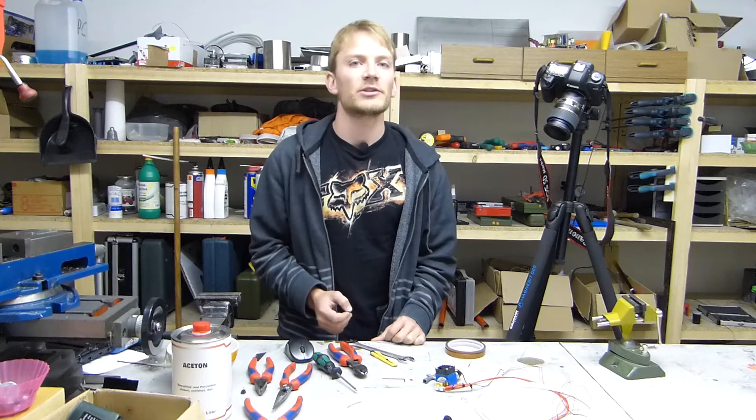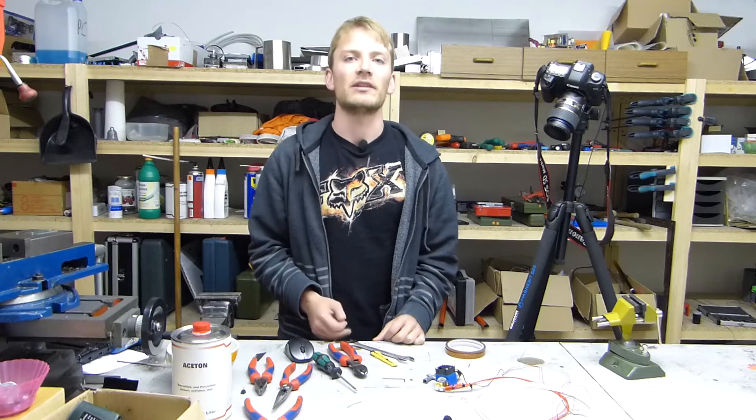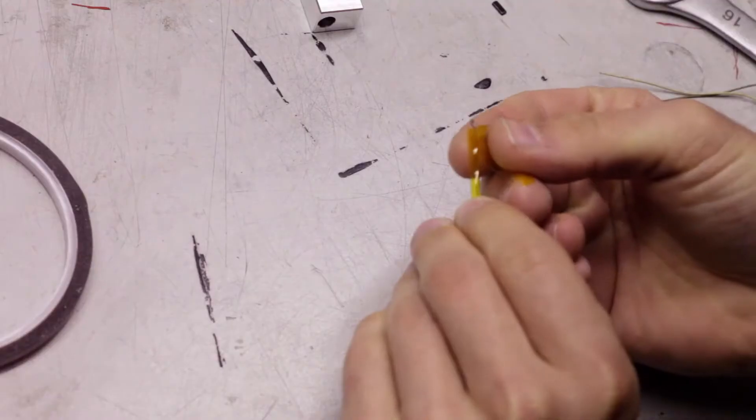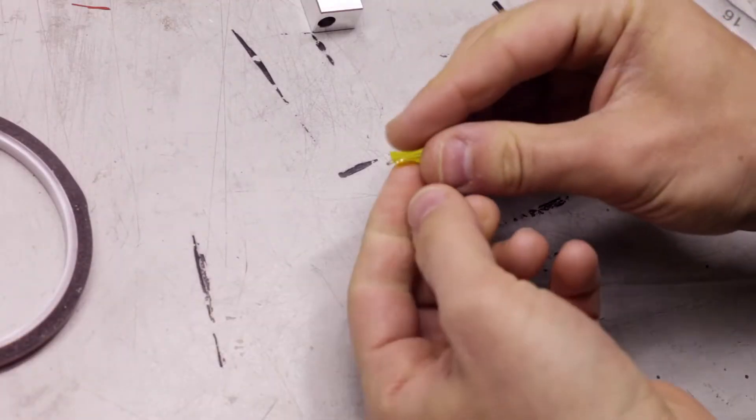First up, to insulate the thermistor's legs, what I like to do is take one strip of Kapton tape and wrap it around one leg, and then use another strip to insulate the second leg and to tie the two legs together.